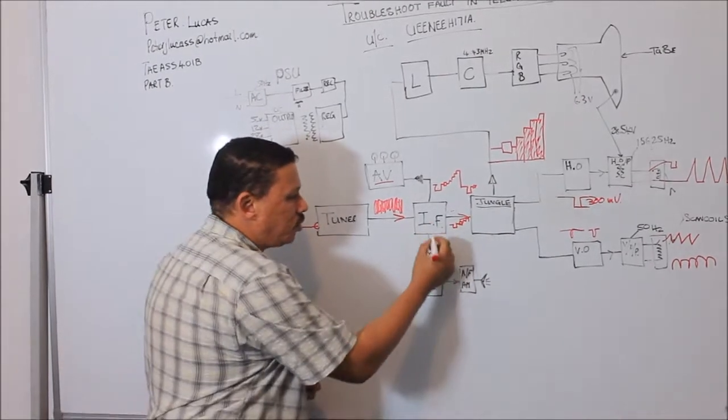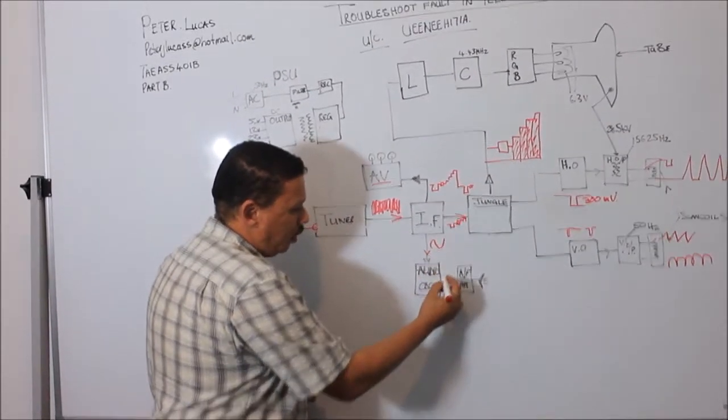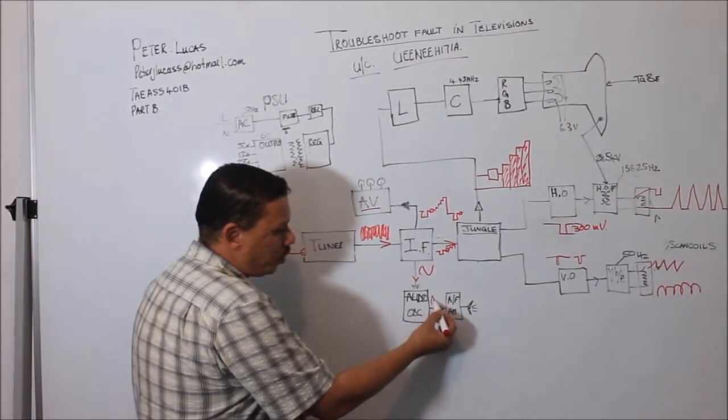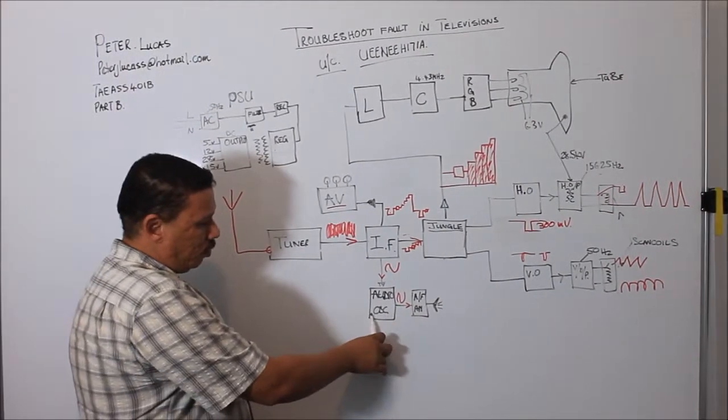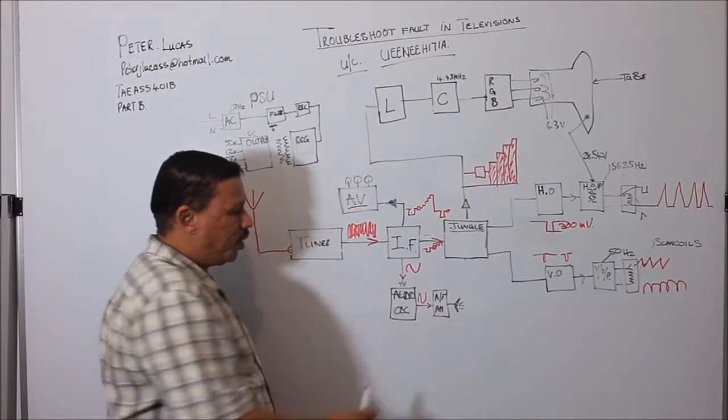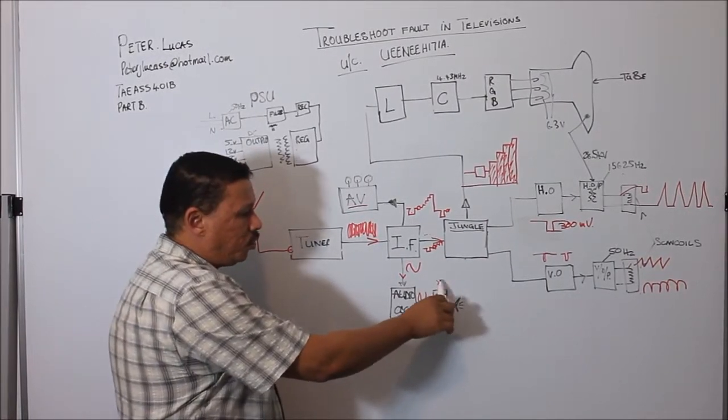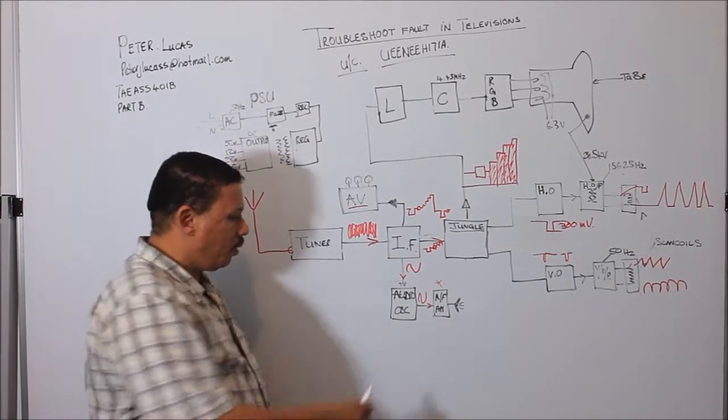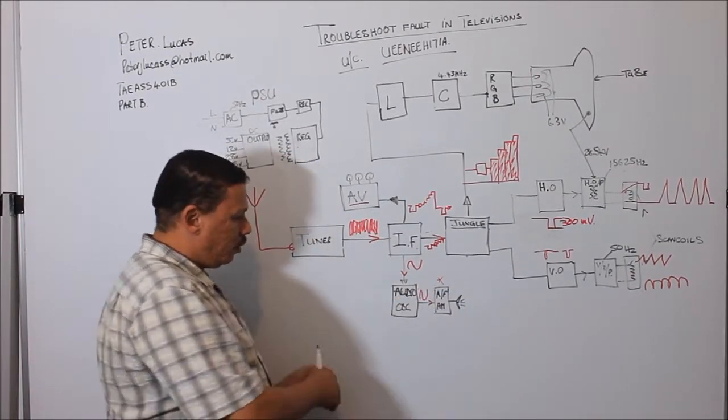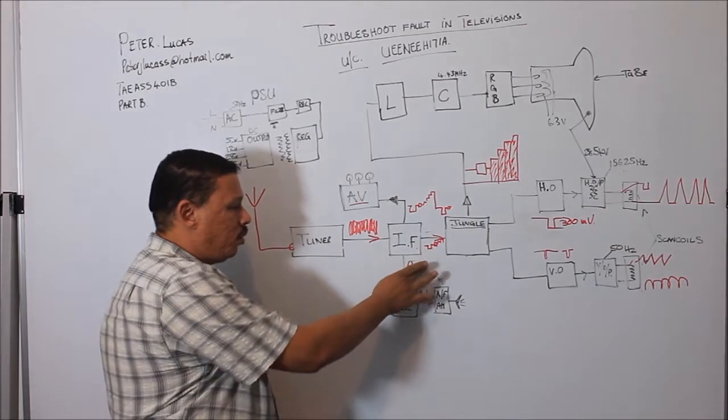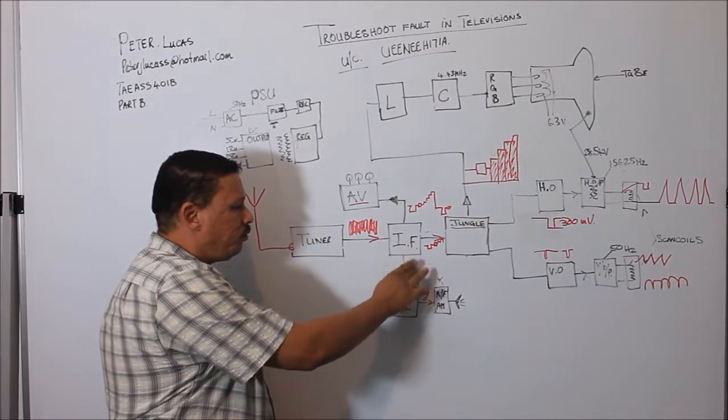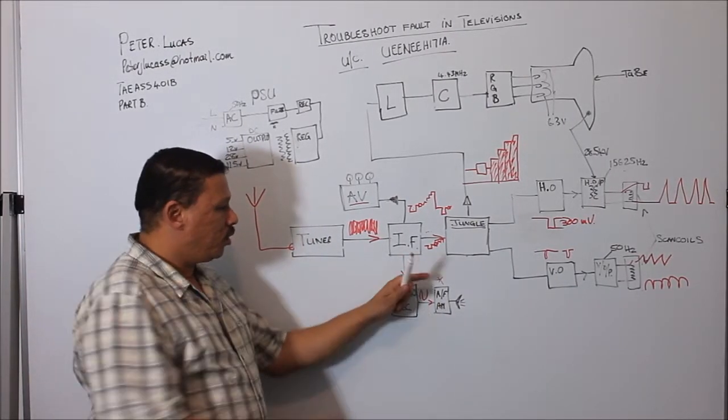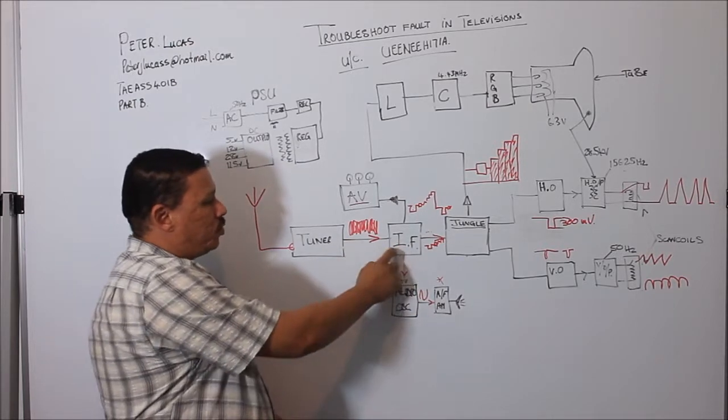If you've got the audio oscillator coming out of the IF and you've got an audio waveform coming out of the oscillator but nothing coming out of the speaker, the probable fault is your audio amplifier. If you've got a situation where there's no waveform coming out of the IF stage, then you know the fault could be between these two.